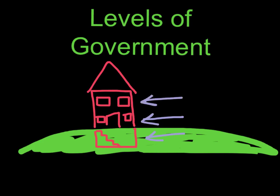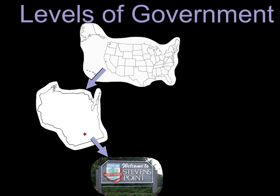And this house even has an attic. So in this house there are one, two, three, four levels. And now we're going to look at government and how this idea of levels applies to government. Now that we have a basic understanding of what levels are, we can take a look at how these apply to government.